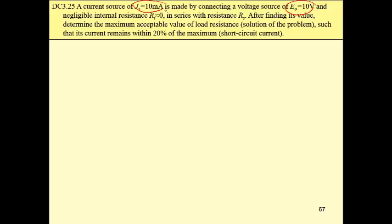This can be done by a series connection of some resistance. Our task is to find this resistance first, and then determine the maximum acceptable value of load resistance such that current remains within 20% of the maximum, which means current will be greater than or equal to 8mA.